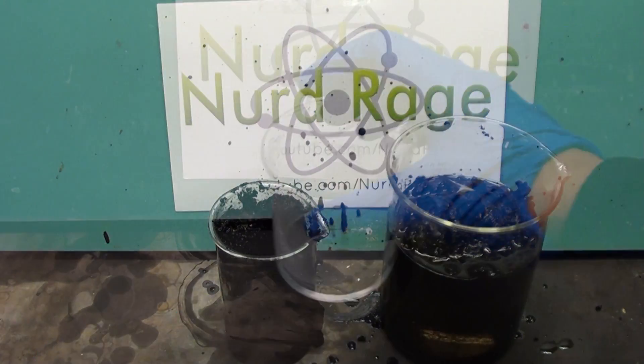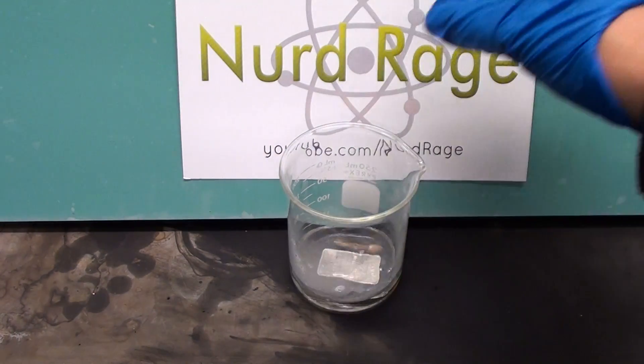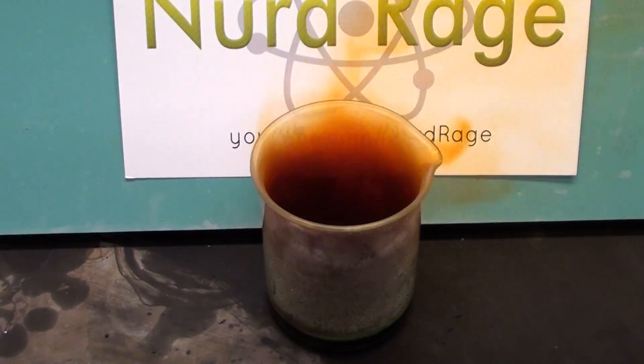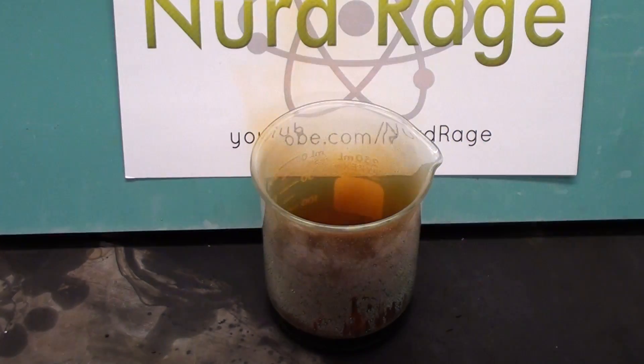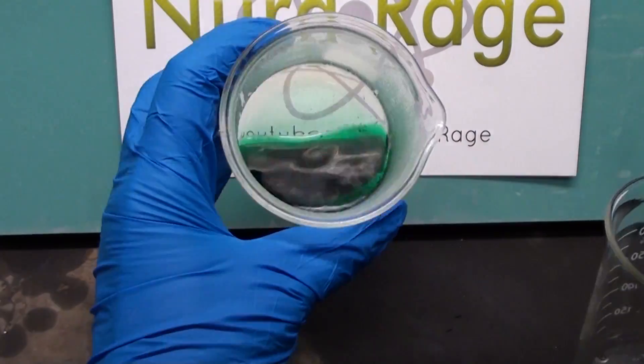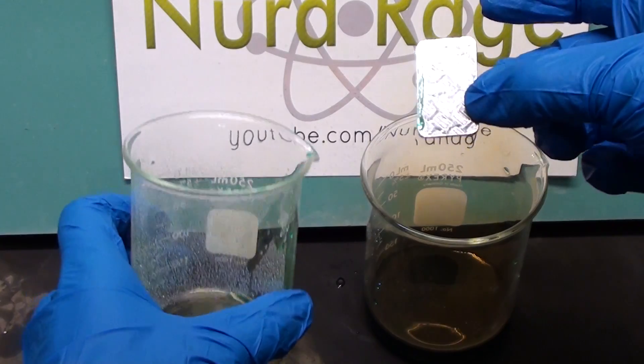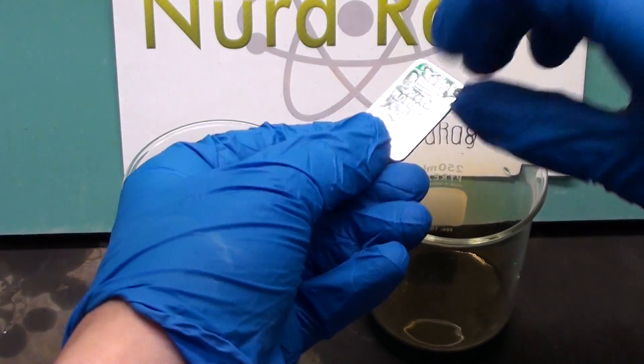Now for the nitric acid test. For comparison I'm also going to toss in a piece of copper. The nitric acid is reacting with the copper to produce copper nitrate and this brown nitrogen dioxide gas. Okay, looks like the reaction is done and here is the platinum bar, completely immune to the nitric acid.